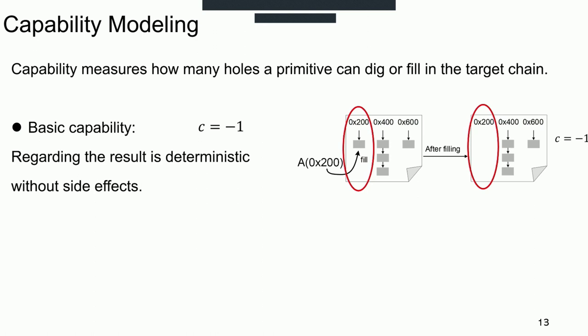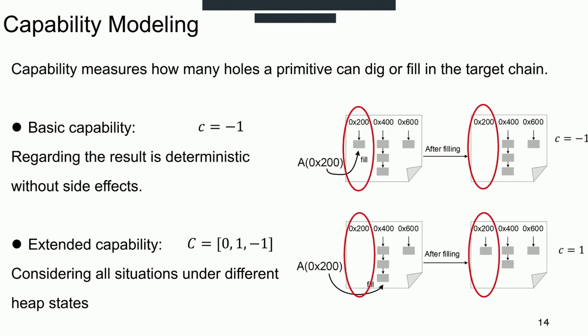As for the extended capability, it considers all situations under different heap states. As shown in the right picture, the allocation of hex 200 bytes will increase one hole in the target chain within specific heap states, and the capability is one. The extended capability relies on features of allocator and the specific heap states.